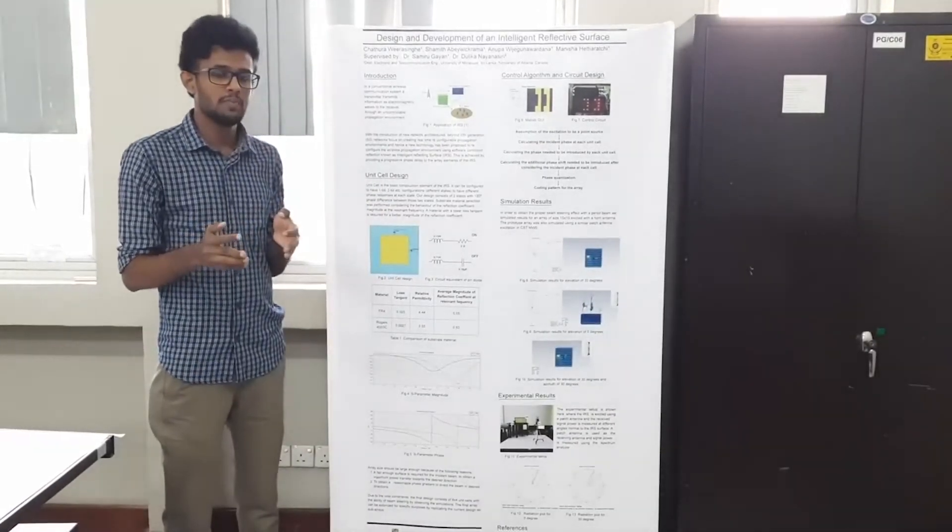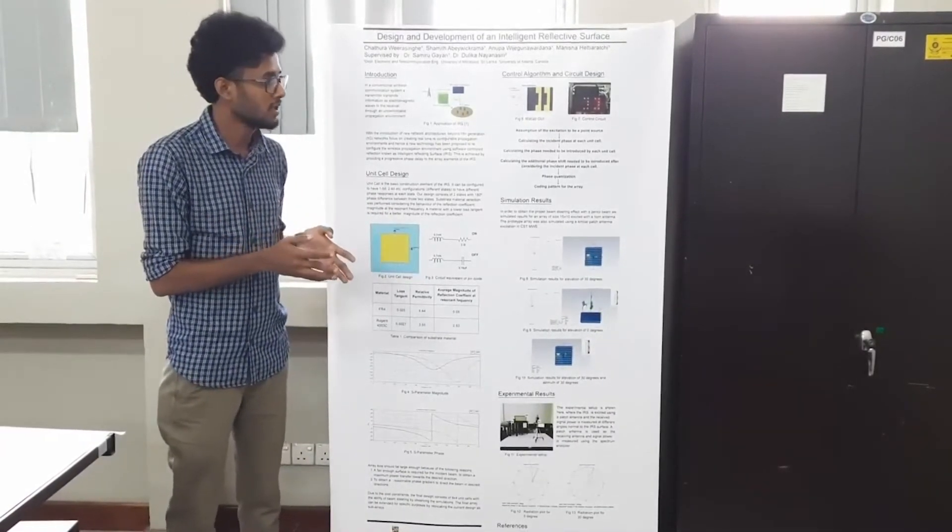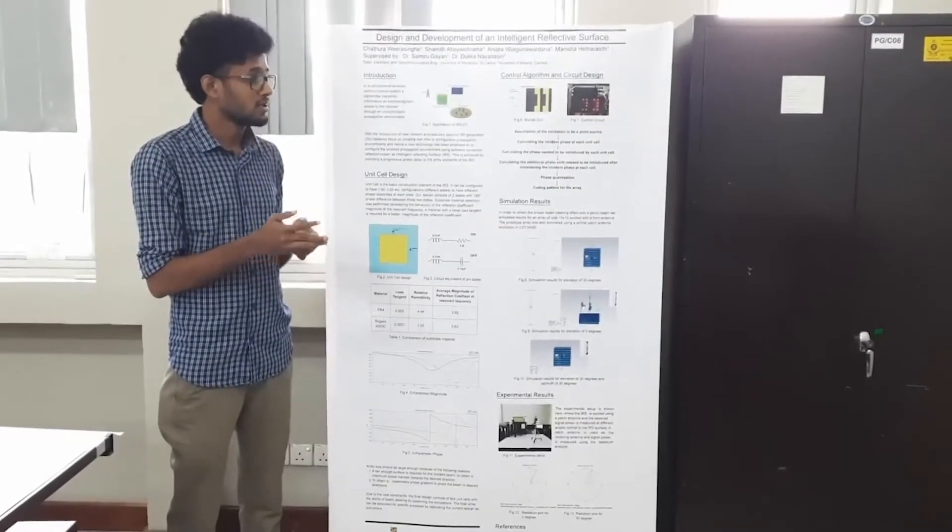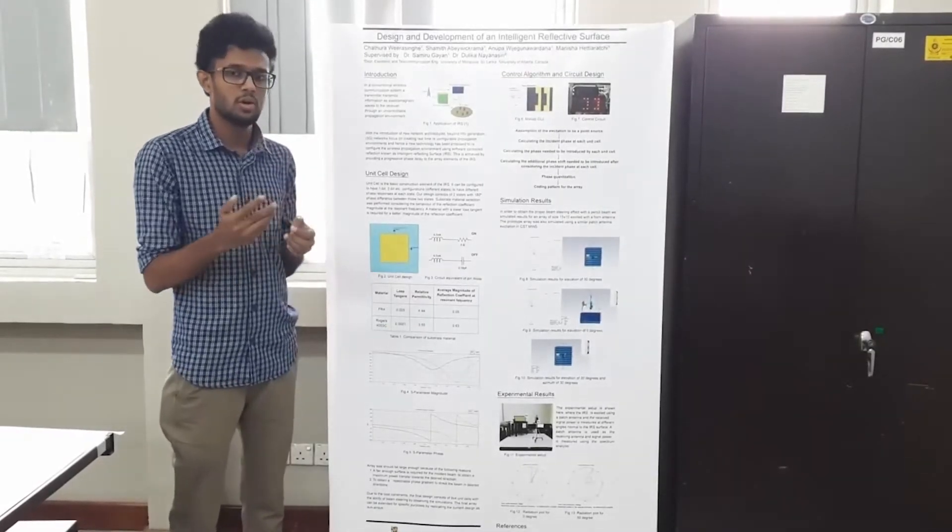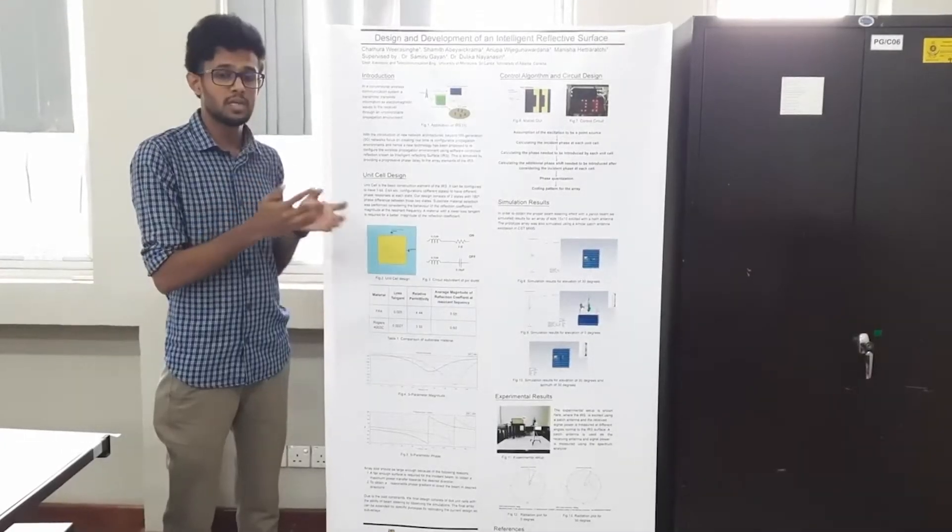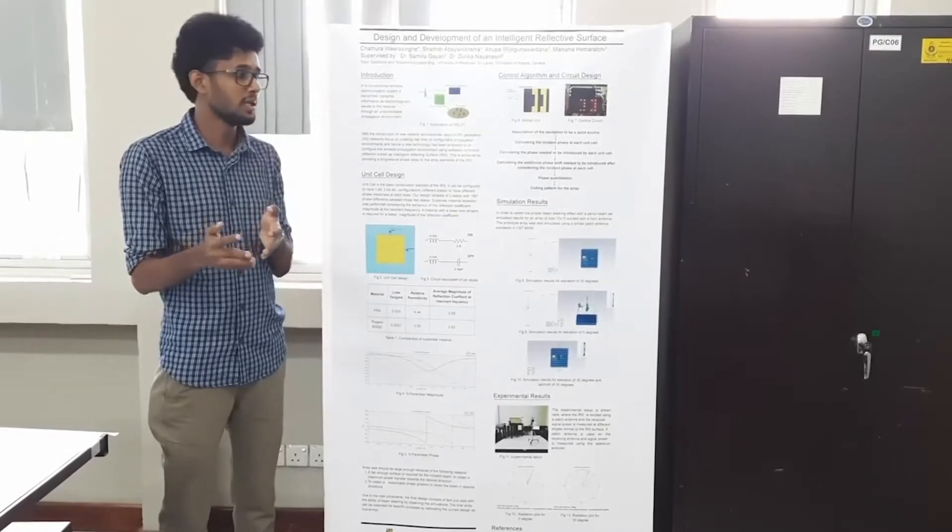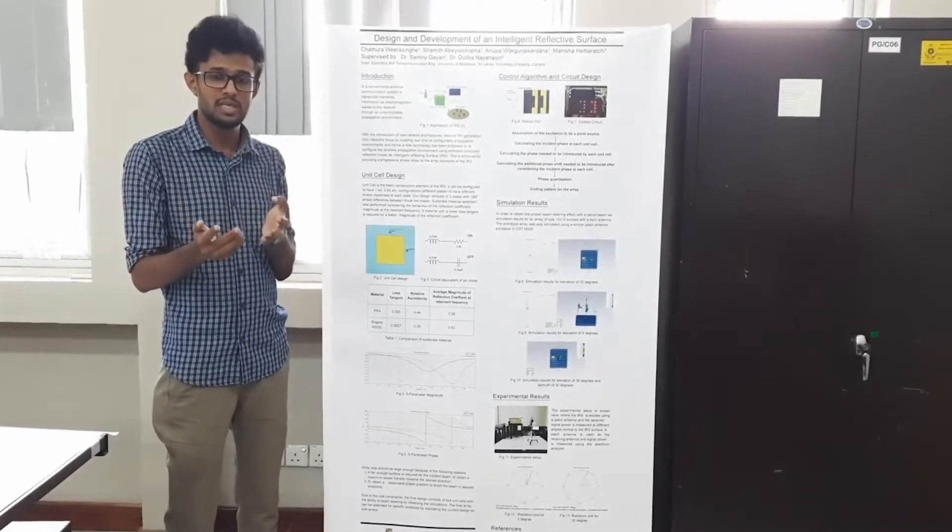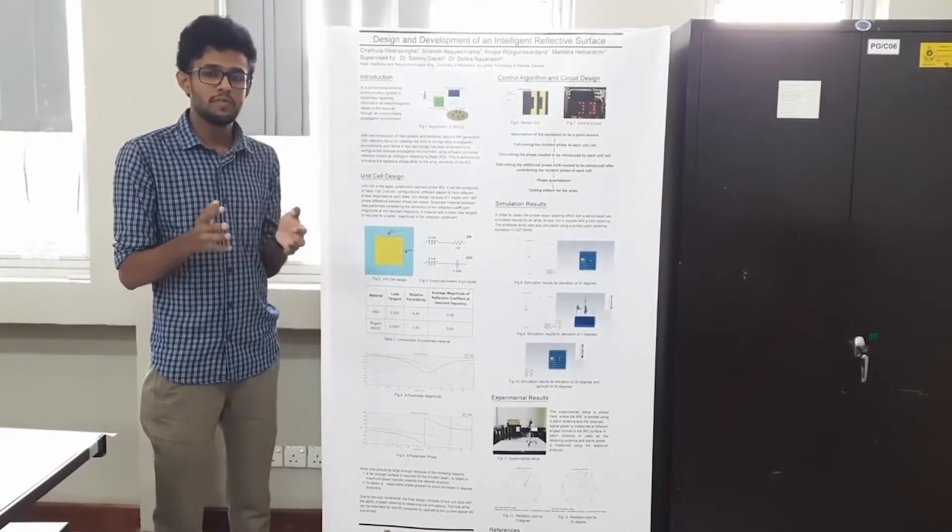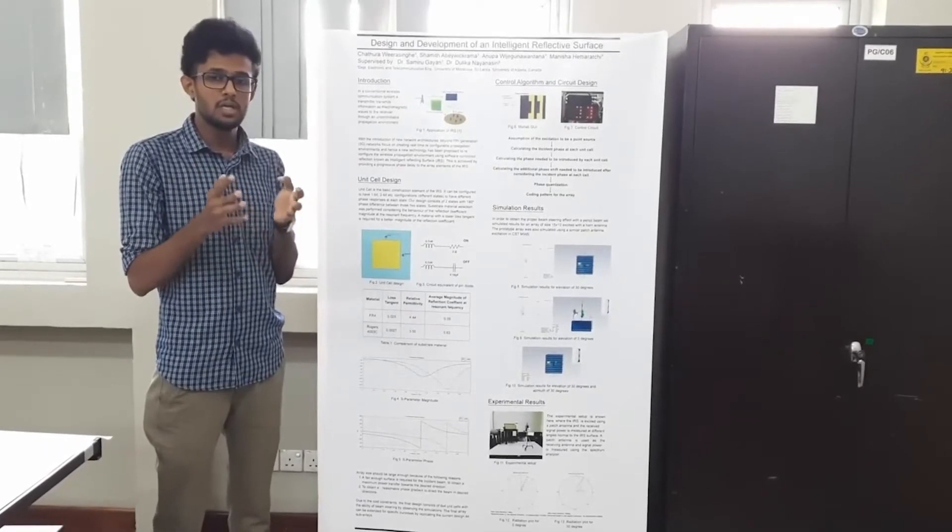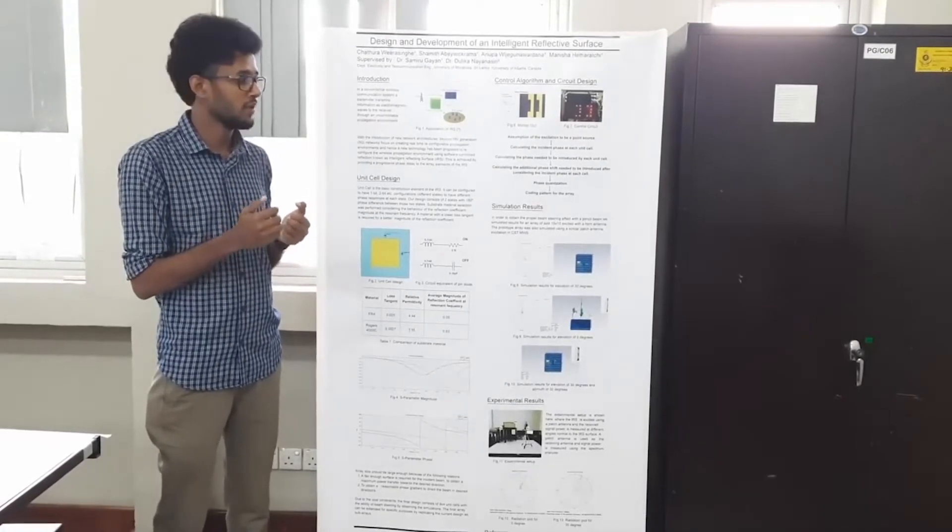To the control algorithm, we mainly give two inputs. The first one is the location of the transmitter and the second one is the desired direction. With those two parameters, we calculate the spatial phase delay from the transmitter to each of those unit cells and also the progressive phase that will happen at each of those unit cells as well. When we get the difference of those two values, we can have the phase delay which should be imparted by each of those unit cells on the incident wave.